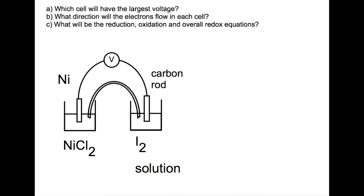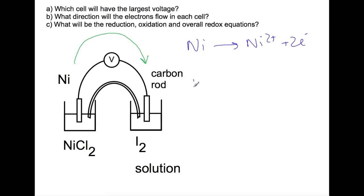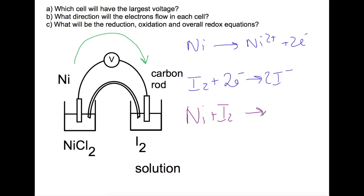Finally let's look at the last electrochemical cell, which involves a non-metal element. Looking at where nickel and iodine are found on the electrochemical series: nickel is higher up than iodine, so the electrons will flow from the nickel to the iodine. We can use the electrochemical series to write out the equations: nickel will become Ni²⁺ plus two electrons; iodine solution will gain these electrons to form two iodide ions (I⁻). We can then combine these two equations to form our redox equation. Thank you for watching — please remember to subscribe and follow me on Twitter at MissAdamsKim for regular updates on new videos. Bye for now!